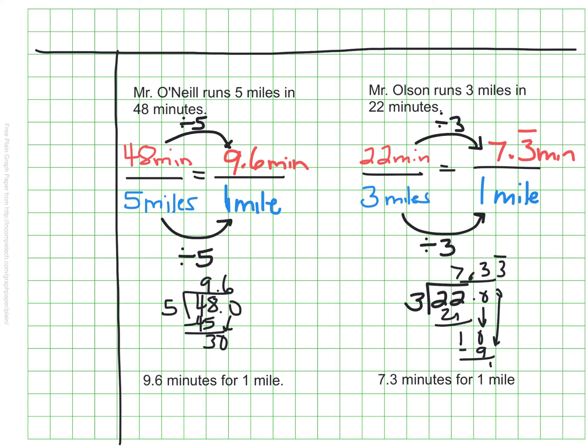Now that I've calculated how long it will take each of them to run the same distance, the same one mile, I can see that Mr. Olson needs less time and is therefore faster. Mr. Olson, in this example, runs faster than Mr. O'Neill.